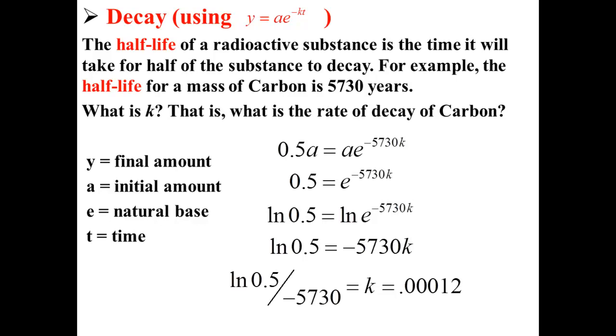Now, k is equal to ln 0.5 divided by negative 5,730, which is equal to 0.00012. So, the rate of decay of carbon is equal to 0.00012.